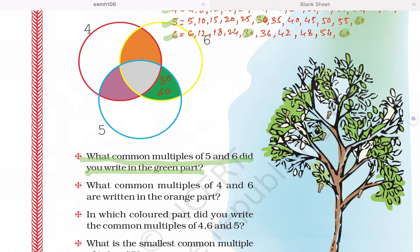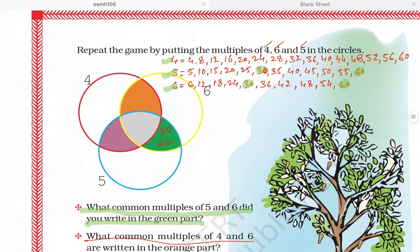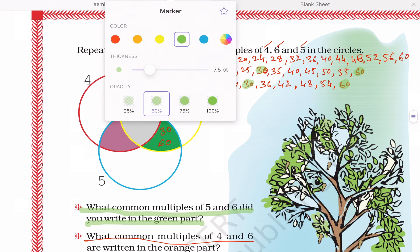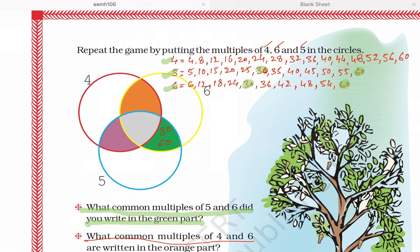Now come to the second question. What common multiples of 4 and 6 are written in the orange part? The common multiples of 4 and 6 are 12, 24, 36, 48,